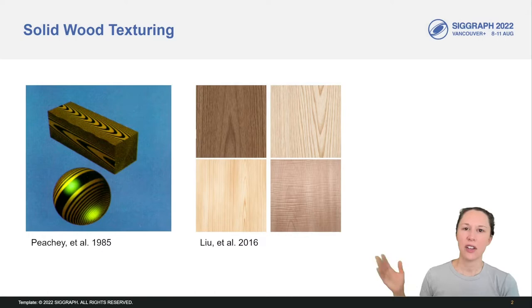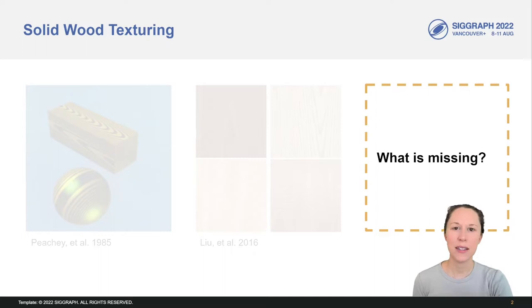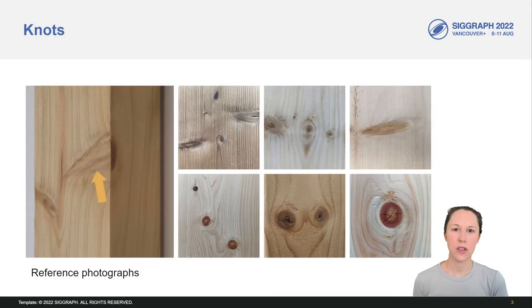Synthetically generated solid wood textures have developed to a standard where they are nearly indistinguishable from real wood. But one important feature is missing. I suppose the title of our paper already gave it away, but I'm talking about knots - these darker spots in the wood texture that cause intricate distortions to the annular ring patterns.